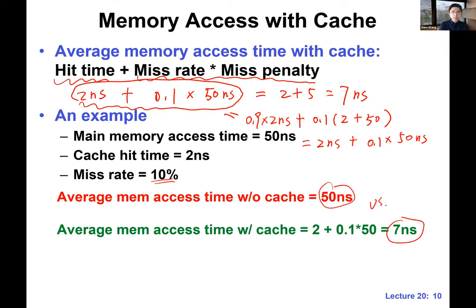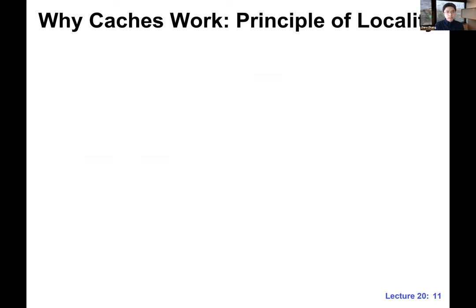This seems like a huge improvement — from 50 nanoseconds all the way down to 7 nanoseconds just by introducing cache. But how can we have this expectation that we can get away with fairly small memory like the data cache and instruction cache using SRAM? What is the rationale? Even though we need to access a large amount of data, for most software programs executed on a microprocessor, they have nice qualities called temporal locality and spatial locality.